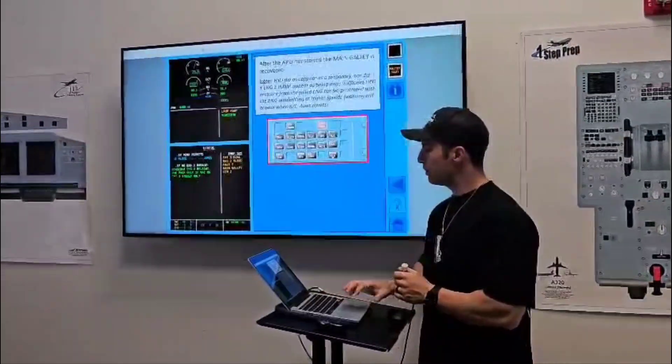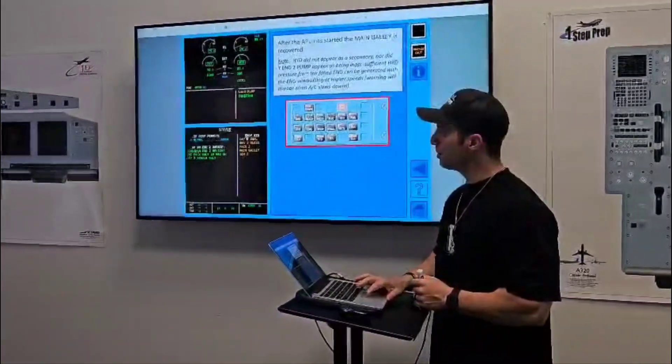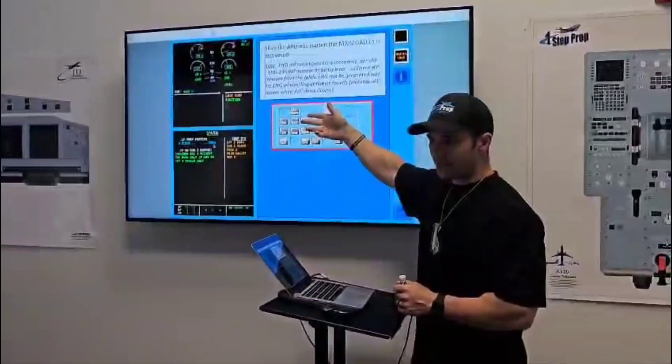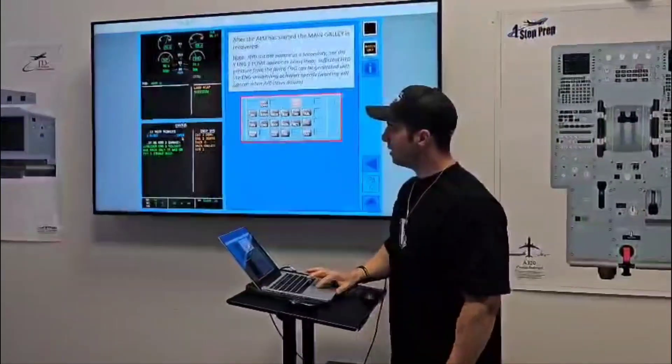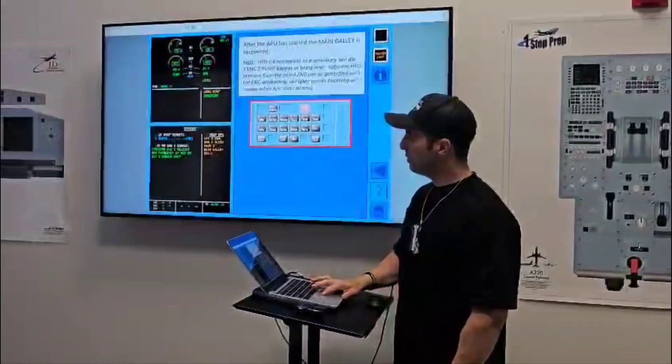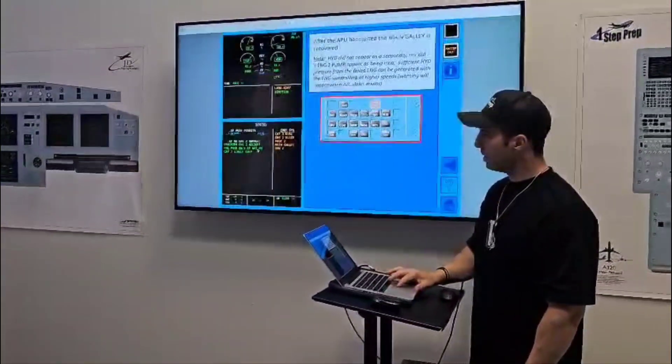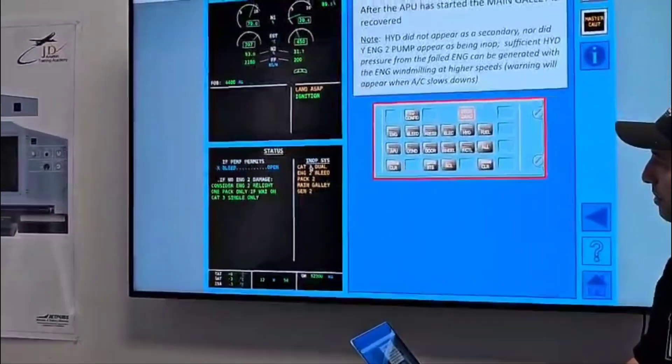Status, if performance permits, cross bleed open - that's to prepare you for engine starting, which you already attempted. If no engine two damage, consider engine two relight. We did. One pack only if WAI. CAT3 single only in-op system.